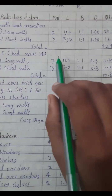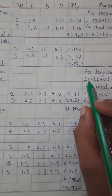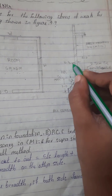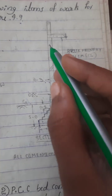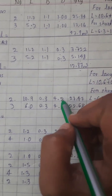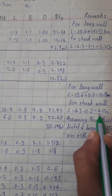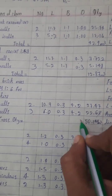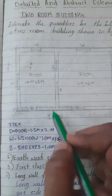The third item is first class brick masonry. Long wall is 2 numbers and short wall is 3 numbers. Long wall length is 10.6m, width is 0.3m, height is 4.2m giving 7.47 cubic meters. Short wall length is 6.3m, width is 0.3m, and total is 64.4. We deduct for buildings, doors, and shelves.